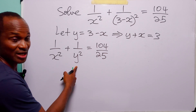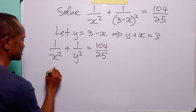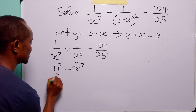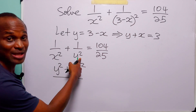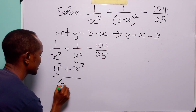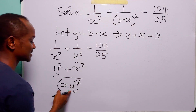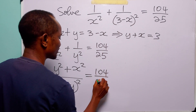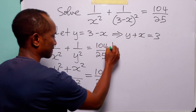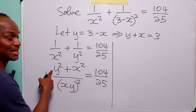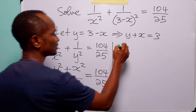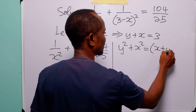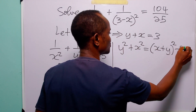Now we can combine these two fractions: 1 times y squared is y squared, plus x squared times 1 is x squared, all divided by x squared times y squared, which we can write as (xy) squared. And of course, this is still equal to 104 over 25. But let us remember that y squared plus x squared is also equal to (x plus y) squared minus 2xy.